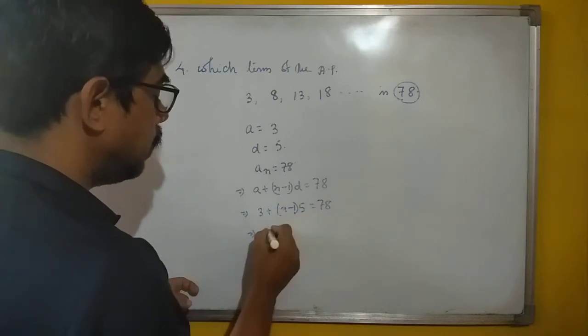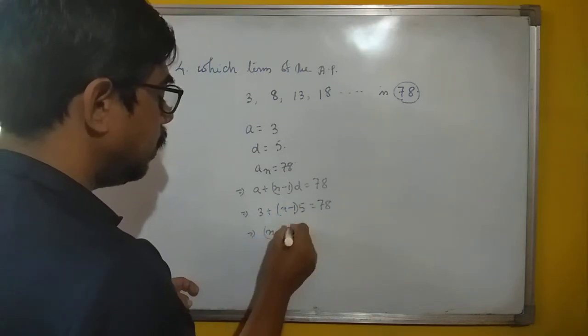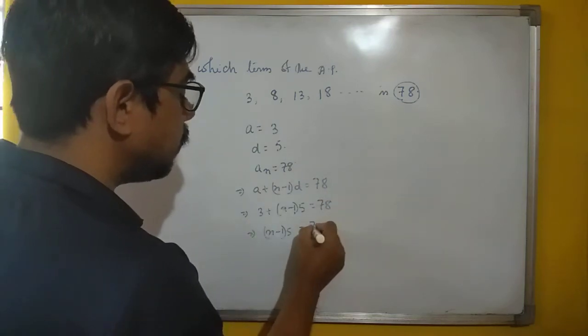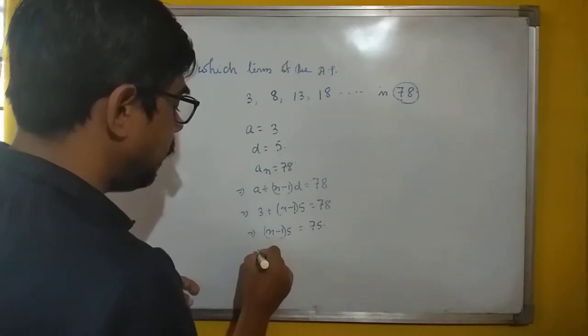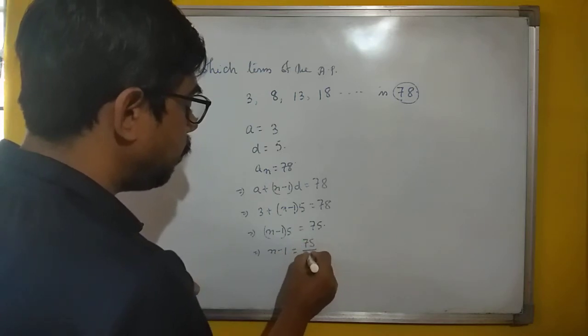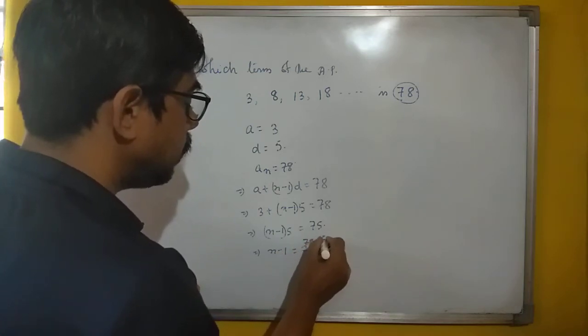So it will be N minus 1 into 5, you take this, it will be 75. Then it will be N minus 1 equal to 75 by 5. Cancel it, 15.